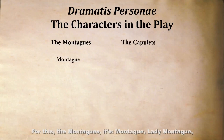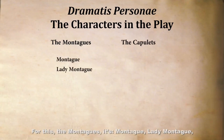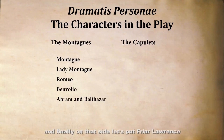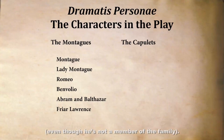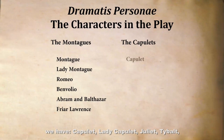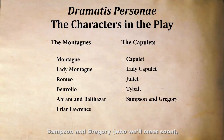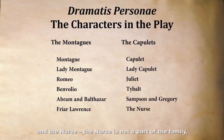If we list the Montagues, it's Montague, Lady Montague, Romeo, Benvolio, Abram, and Balthazar. And finally on that side, let's put Friar Lawrence, even though he's not a member of the family. On the other side, the Capulets: Capulet, Lady Capulet, Juliet, Tybalt, Samson, and Gregory, who we'll meet soon, and then the nurse. The nurse is not part of the family, but let's put her there too.